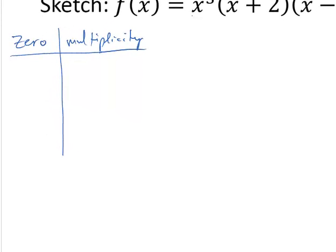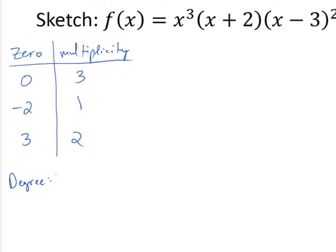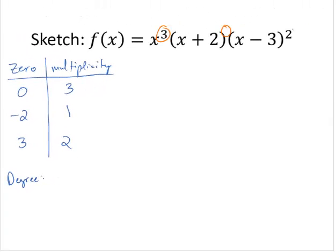So let's see, x cubed. When we see just the x by itself raised to a power, that tells us we have a zero at 0 with multiplicity 3. x plus 2 gives us negative 2 as a zero with multiplicity 1. And then I have a zero of 3 with multiplicity 2. The degree is 3 plus 1 plus 2. The degree is 6.